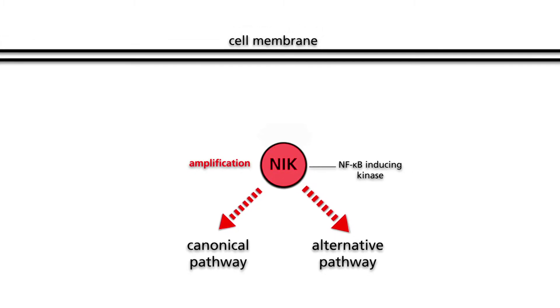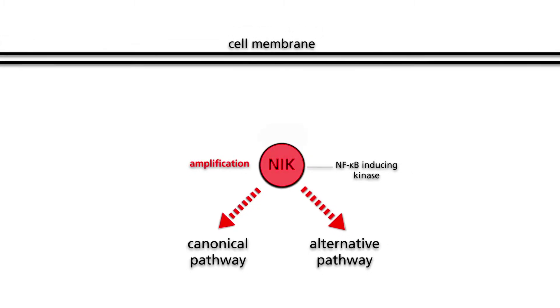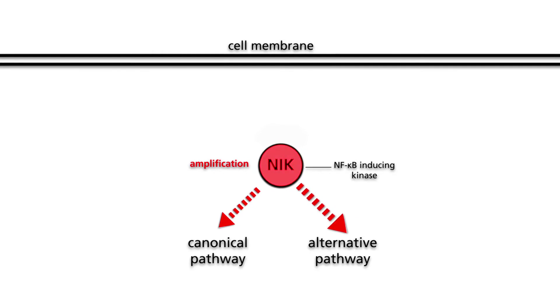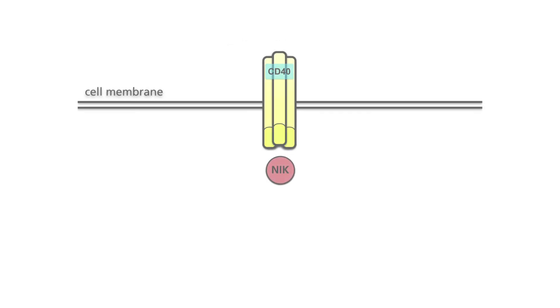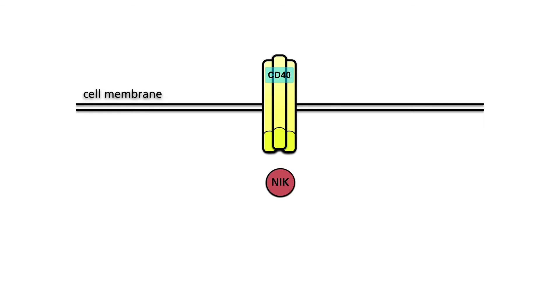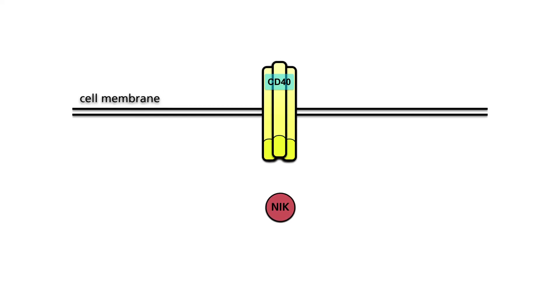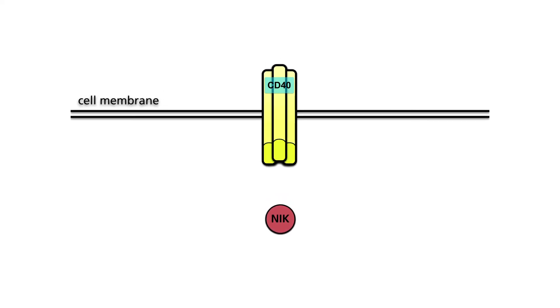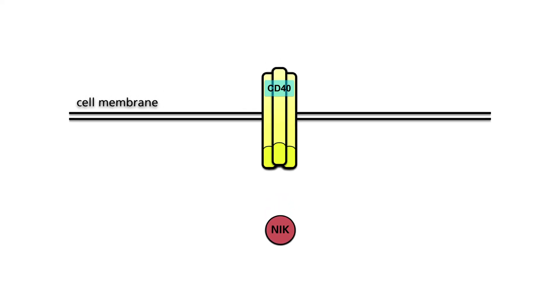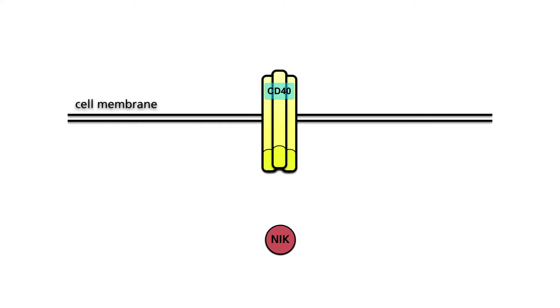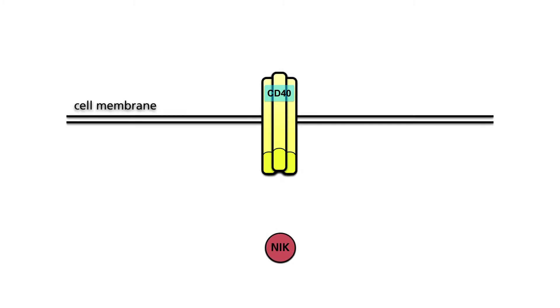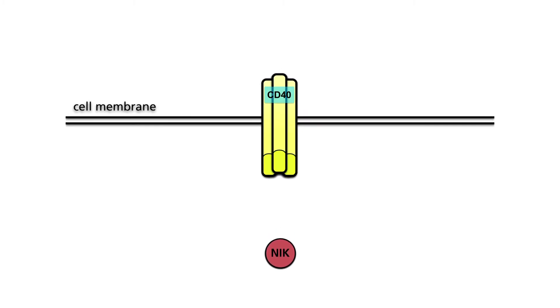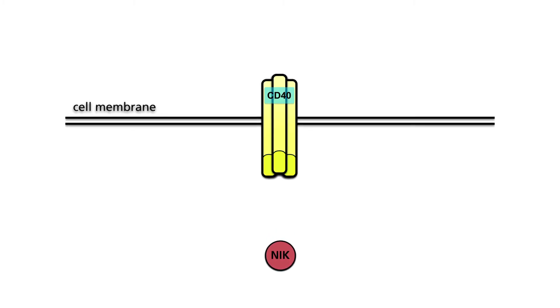When overexpressed, NIK can activate NF-κB pathways. NIK can also be activated by the amplification of genes that, under physiological conditions, signal via the alternative NF-κB pathway.